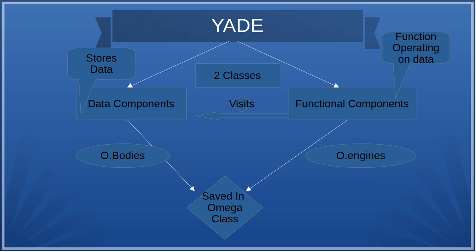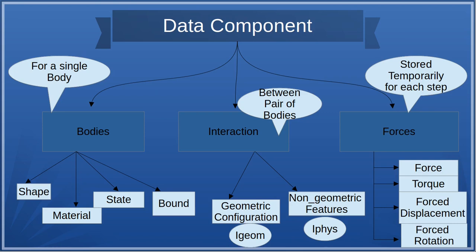The two components of YADE are the data component and the functional component. The data component stores data of the simulation and it is saved in the scene Omega by giving a command like 'o.bodies.append', where o is the Omega scene. The functional component takes data from the data components and does physics and interaction based on that — forces. It visits the data component, that's why it's called the visitor pattern, and it's added to a scene by referring to it as 'o.engines'.